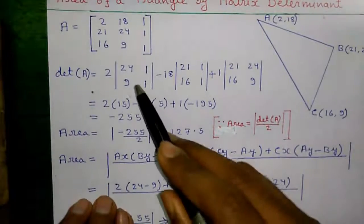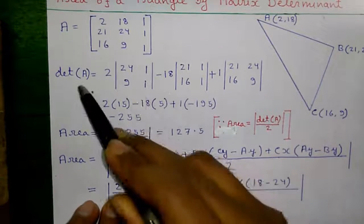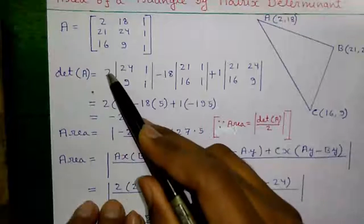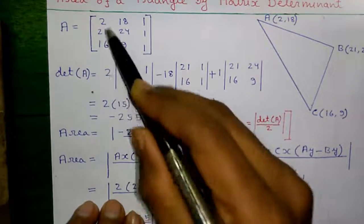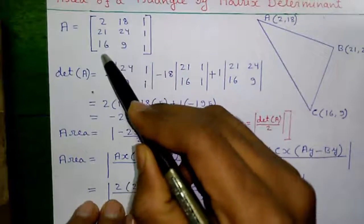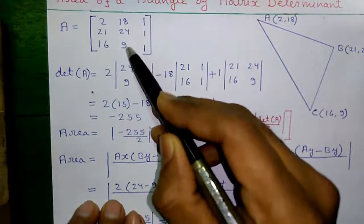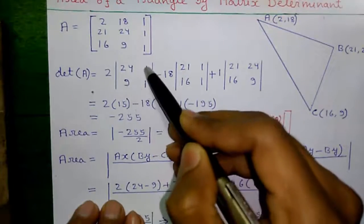Now, let me tell you how you can do it manually. So, determinant of matrix A equals to first element, which is 2 into hide row 1 and column 1. So, we are left with 24, 9, 1 and 1.